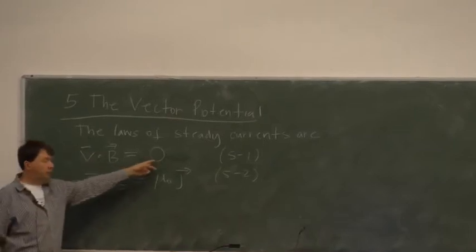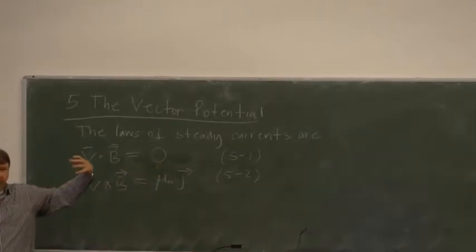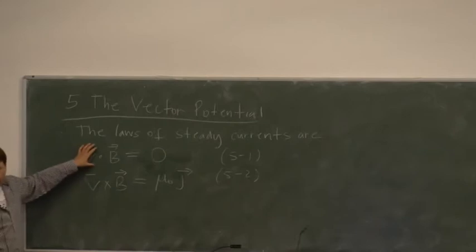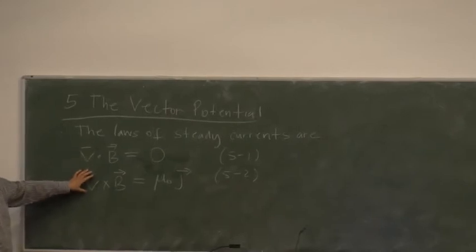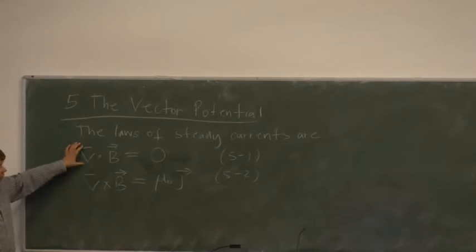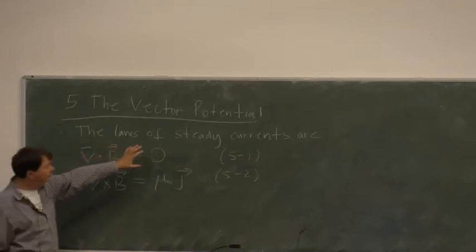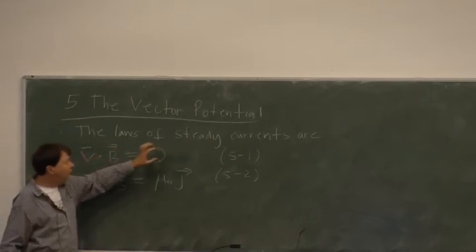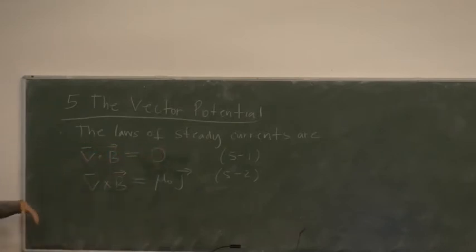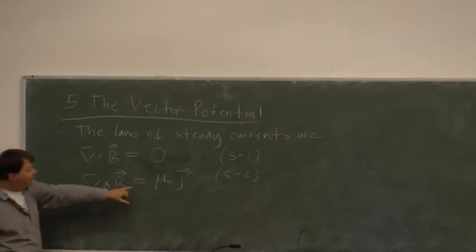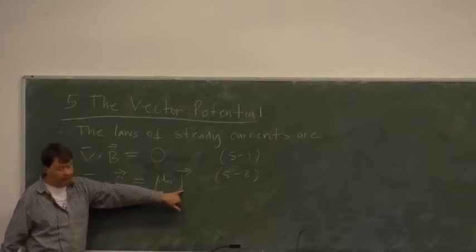If nature presented us with magnetic monopoles, with magnetic fields that diverge from a point, this wouldn't be true. If Ampere's law wasn't true experimentally for steady currents, then this wouldn't be true. This is really the physics. This relates the magnetic field to its source. There are no point sources of magnetism. The only source is this steady current.